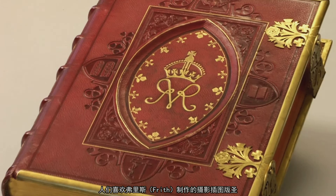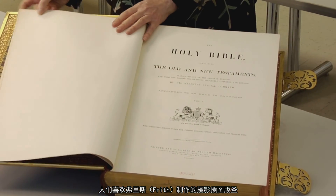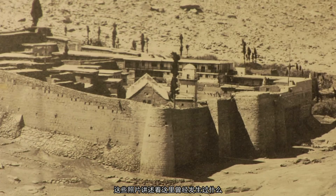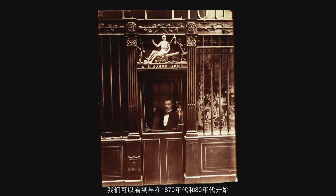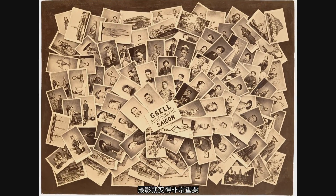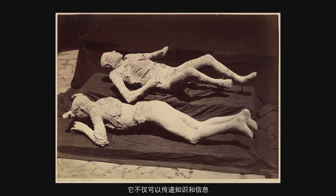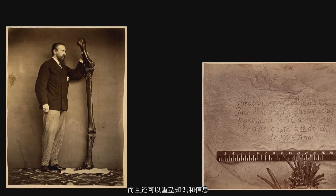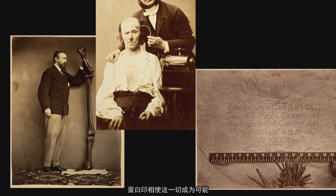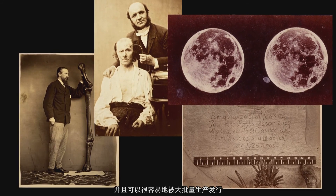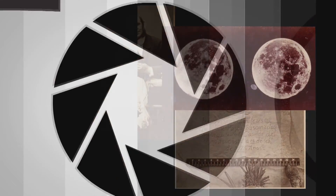People like Frith produced photographically illustrated Bibles, where he photographed the sites in the 19th century where things told about in the Bible were said to have happened. We begin to see how, as early as the 1870s and 80s, the photograph becomes a really important — not just conveyor of knowledge and information, but a shaper of knowledge and information. And it's the albumin print that made that possible because it was precise, it was detailed, it was cheap, and it could be mass produced and distributed easily.